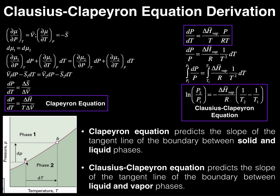Suppose we're at point A on this phase diagram — on the red line where phase one and phase two are in equilibrium. If I move from point A to point B, both pressure and temperature increase. These two points are very very close together: the vertical distance is dP, an infinitesimally small change in pressure, and the horizontal distance is dT, an infinitesimally small change in temperature. To keep the two phases in equilibrium, we require d-mu-one equals d-mu-two.